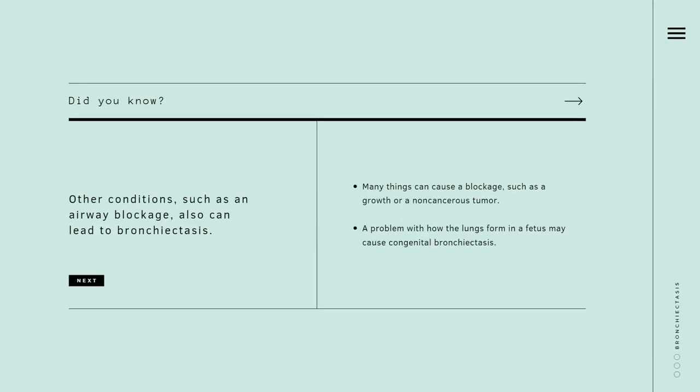Other conditions such as airway blockage can also lead to bronchiectasis. Many things can cause a blockage, such as a growth or a non-cancerous tumor. An inhaled object, such as a piece of a toy or a peanut that you inhaled as a child, can also cause an airway blockage. A problem with how the lungs form in a fetus may cause congenital bronchiectasis, which affects infants and children.